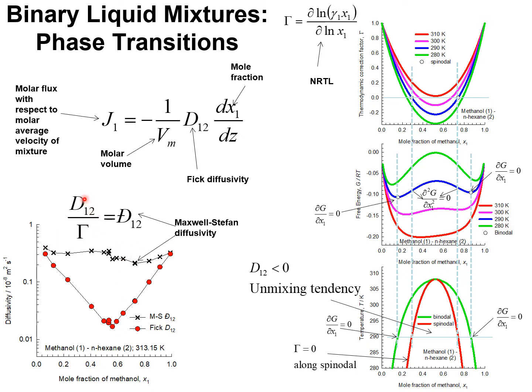By dividing the Fick diffusivity by the thermodynamic correction factor gamma, we obtain the Maxwell-Stefan diffusivity, and that Maxwell-Stefan diffusivity is practically independent of composition. This is the persuasive advantage of using the Maxwell-Stefan formulation because it shows more predictable composition dependence than does the Fick diffusivity. Now, let us try and understand this reduction in the Fick diffusivity value as shown by the experimental data.